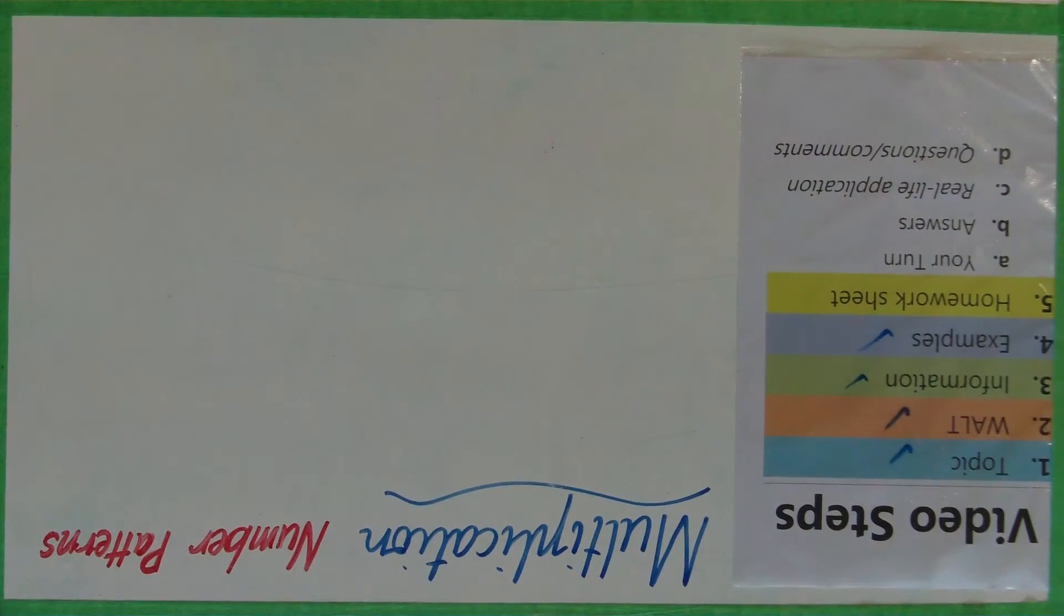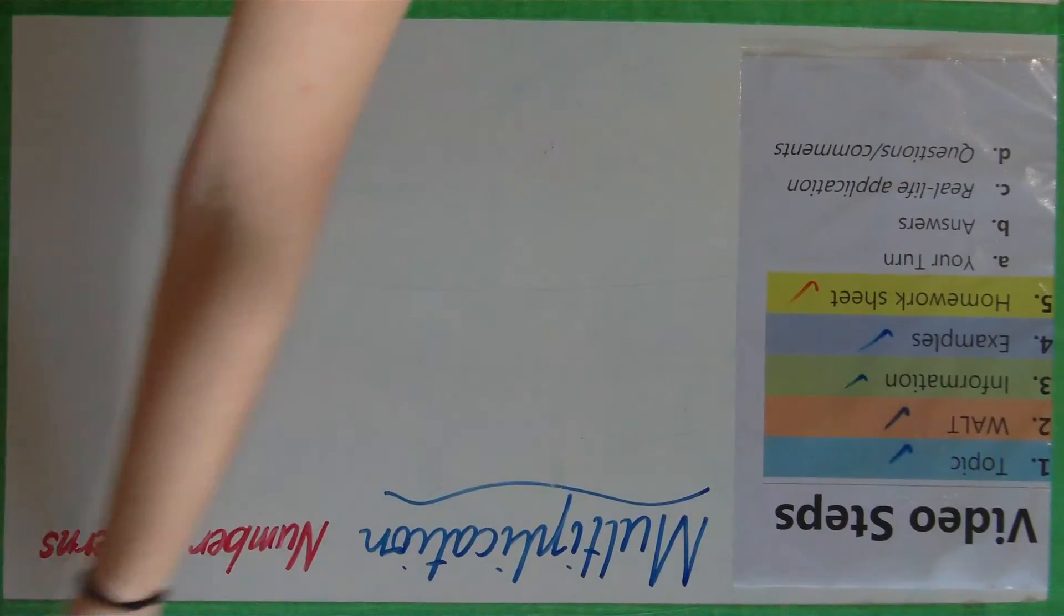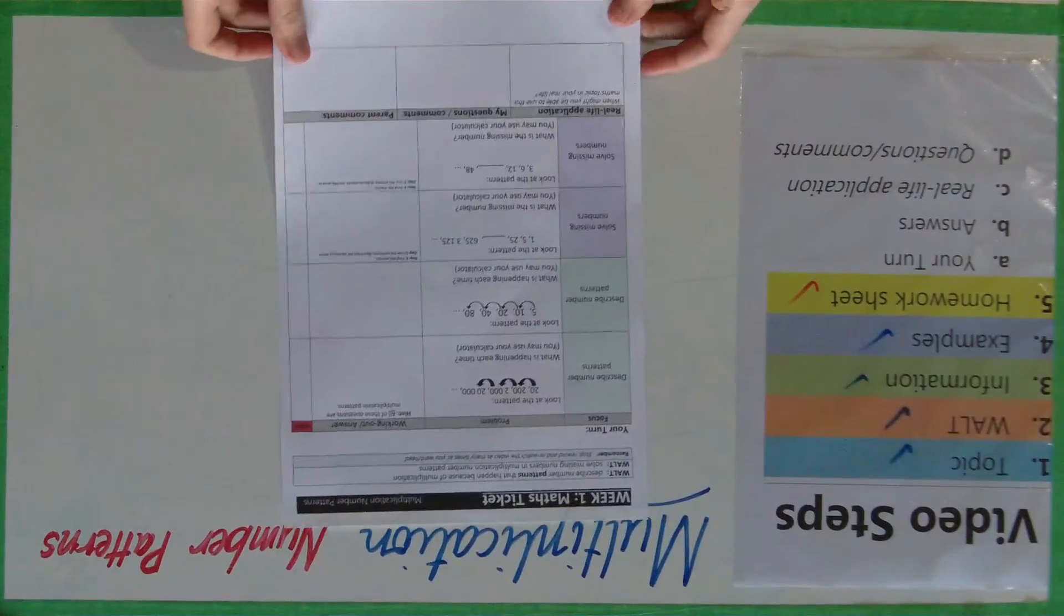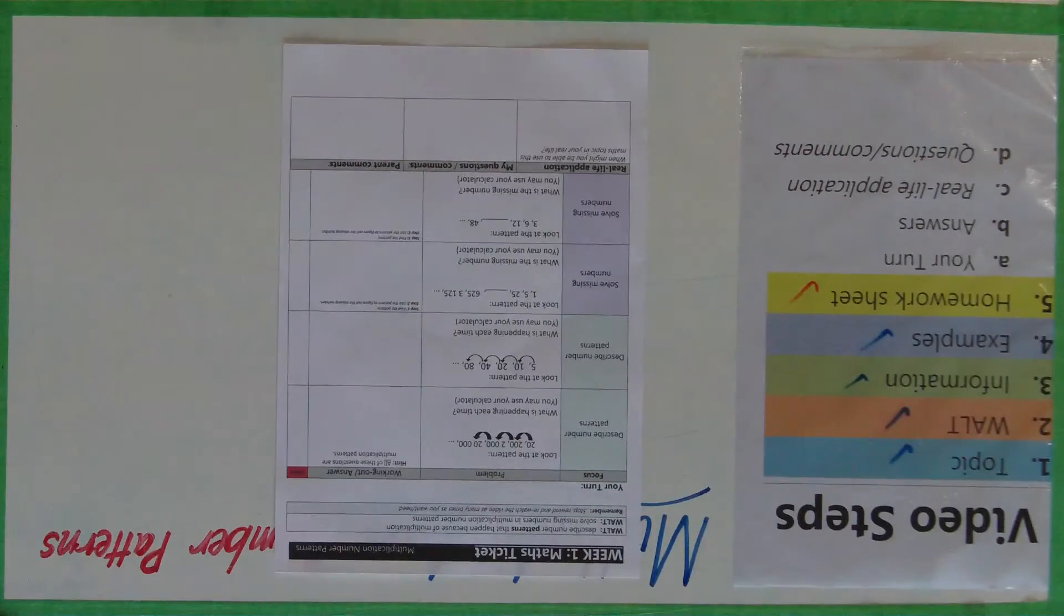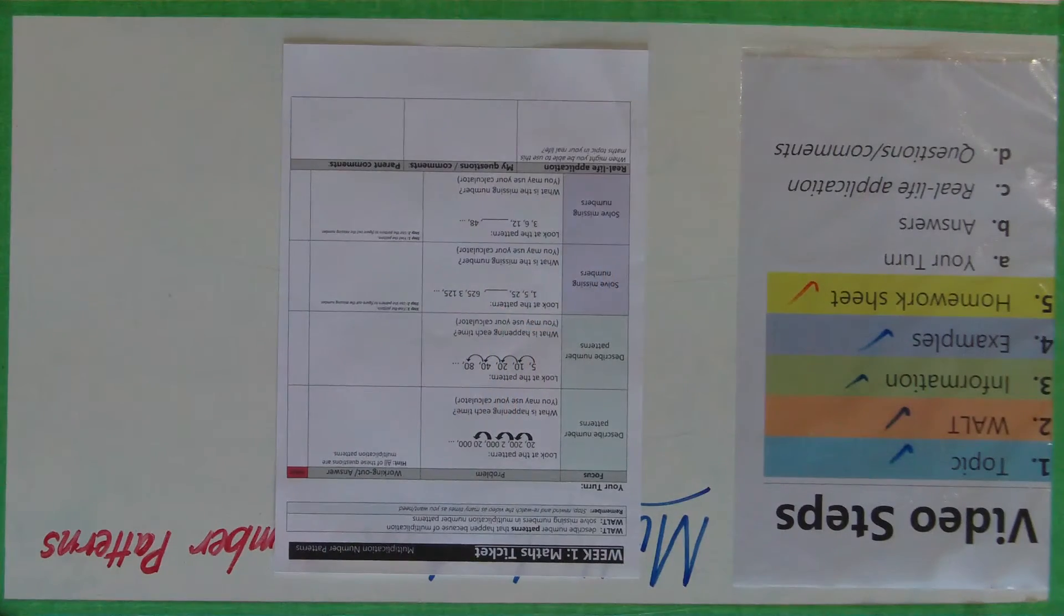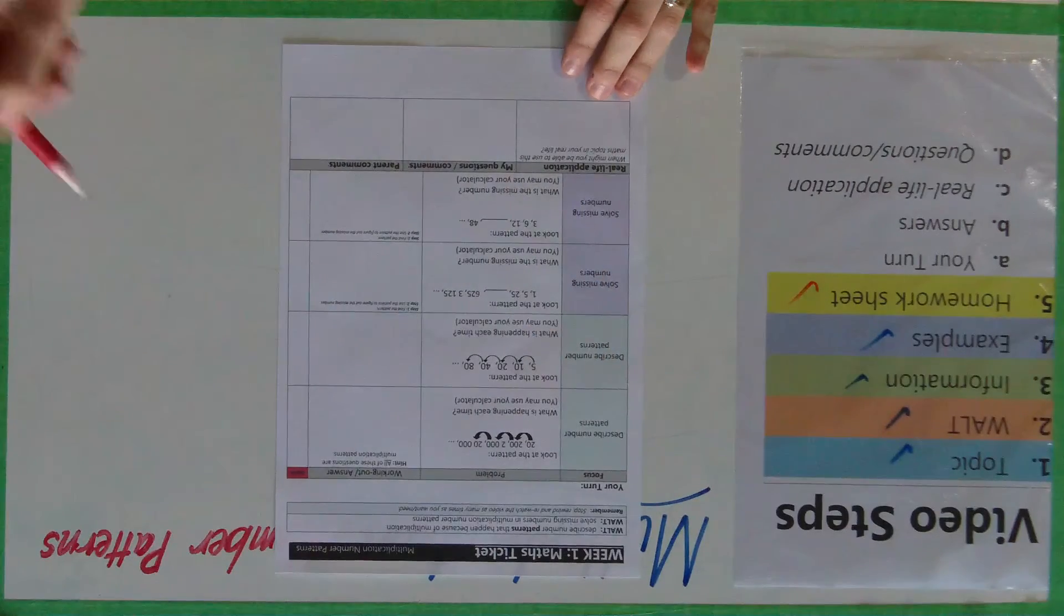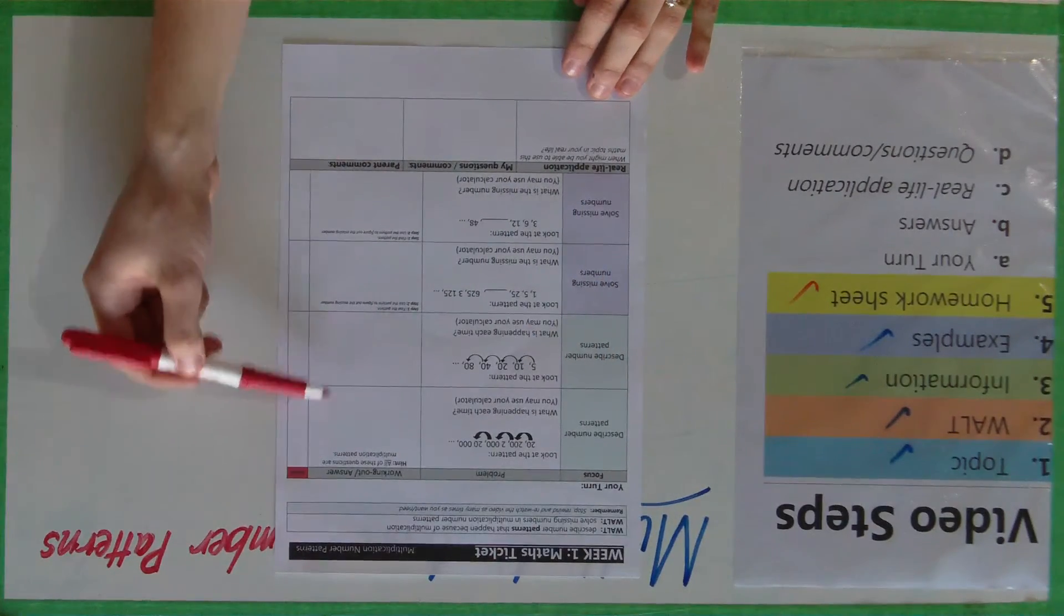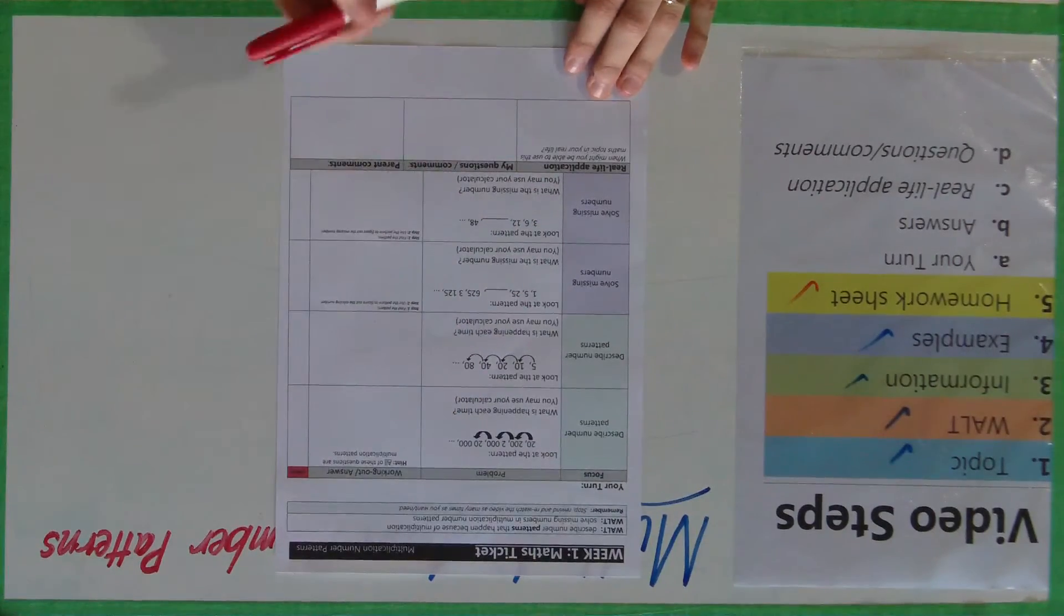And so we're moving on to our homework sheet. First question, it says look at the pattern 20, 200, 2000, 20,000, what is happening each time? This is describing the number patterns. So just a hint, all of these questions are multiplication, all these patterns are multiplication patterns.